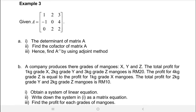Alright, for example 3, they give already a matrix A which is a 3×3 matrix: 1, 2, 3, 9, 1, 0, 4, 1, 0, 2, 2. The first question asks for the determinant of matrix A.